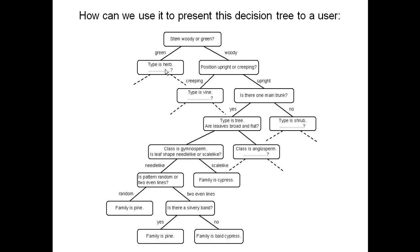Here is the decision tree or classification tree for the plant classification problem. Recall that it starts at the top and asks questions that determine the type. Once it knows the type, it asks questions that determine the class. Once it learns the class, it asks questions that determine the family, which is our goal. We want to process the knowledge base in such a way that it does the exact same thing.